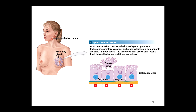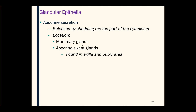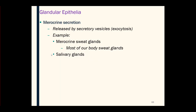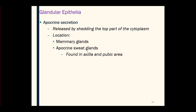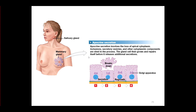We call this apocrine — you can remember it because the apical portion is the top of the epithelial cell. The cell will regrow and continue to make new mammary secretions, and the process happens over and over. The mammary glands do this, as do apocrine sweat glands found in the axilla and pubic region. That sweat is actually a thicker, cloudier secretion compared to merocrine sweat glands, which produce a more watery secretion — because in apocrine secretion, part of the cell is in the secretion.